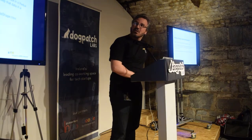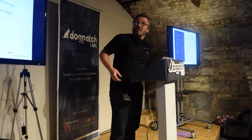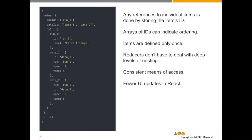A normalized state is basically turning your state into a little miniature database. Everything's referenced by IDs. If you see here, we've got dataset IDs and run IDs — so that's each time the experiment was run, this would identify them. The good thing is your items are only defined once.